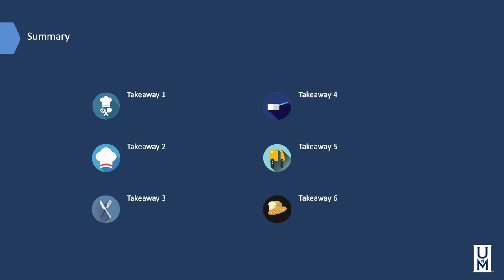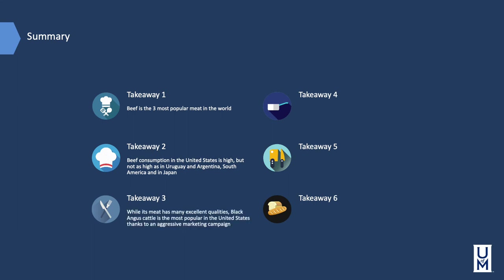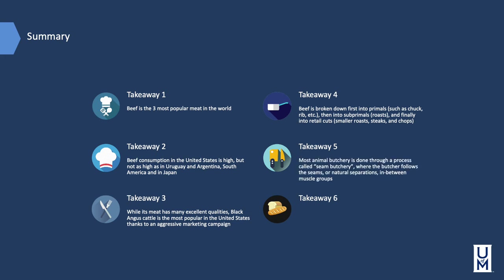Let's summarize today's takeaways. Beef is the third most popular meat in the world. Beef consumption in the United States is high, but not as high as in Uruguay, Argentina, South America, and Japan. Black Angus cattle is most popular in the United States, thanks to an aggressive marketing campaign. Beef is broken down first into primals such as chuck and rib, then into subprimals like roasts, and finally into retail cuts — smaller roasts, steaks, and chops. Most animal butchery is done through seam butchery, where the butcher follows the natural separations between muscle groups. And offals are not awful — some of the most flavorful cuts come from these varieties of meats.